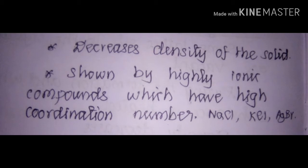Examples of Schottky defect include NaCl, KCl, and AgBr. A mnemonic to remember: Schottky defects cause a decrease in density — 'short' means shorter, so S for Schottky means decrease in density. Note that AgBr can have both Schottky defects and Frenkel defects.